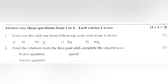Question 2. Find the relation from the first pair and complete the second pair. Scalar quantity: speed. Vector quantity: dash.